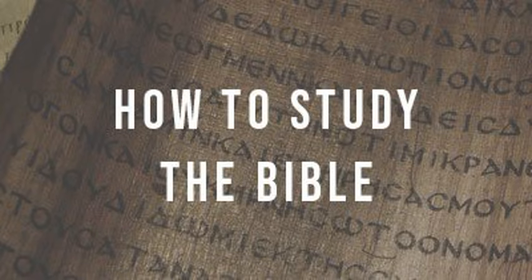Scripture tells us that we ought to apply God's word. James chapter 1, verses 22 through 25 speaks to this truth specifically. James writes: 'But be doers of the word, and not hearers only, deceiving yourselves. For if anyone is a hearer of the word and not a doer, he is like a man who looks intently at his natural face in a mirror. For he looks at himself and goes away and at once forgets what he is like. But the one who looks into the perfect law, the law of liberty, and perseveres, being no hearer who forgets, but a doer who acts, he will be blessed in his doing.'